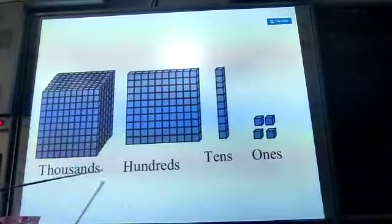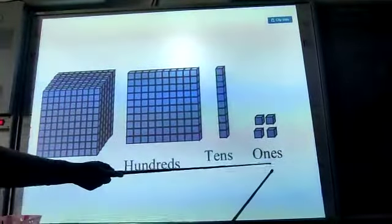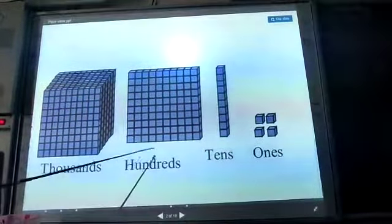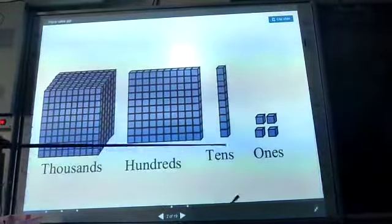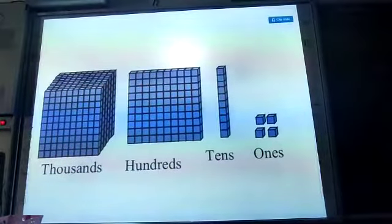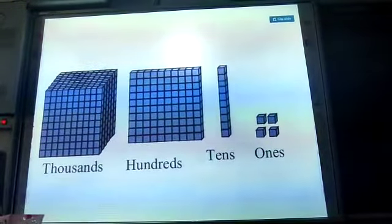These are the place values which represent ones, tens, hundreds, and thousands. We will use these same place values to represent our numbers. Let's see how we represent numbers using place value.